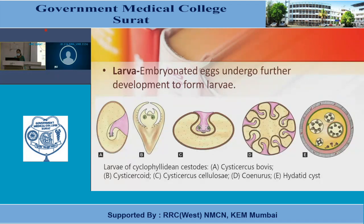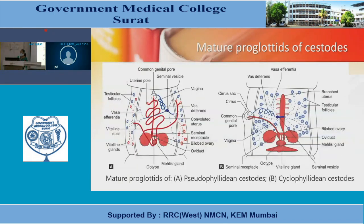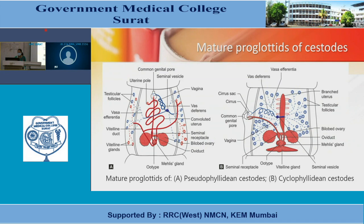Larval forms of Cyclophyllidian cestodes include: cysticercus bovis, cysticercoid, cysticercus cellulosae, coenurus, and hydatid cyst. Mature proglottids: Pseudophyllidian (A) and Cyclophyllidian (B) differ in anatomical features including common genital pores, uterine pores, seminal vesicle, testicular follicles, vagina, vas efferentia, vas deferens, convoluted uterus, vitelline duct, seminal receptacle, bilobed ovary, oviduct, and branched uterus in the Cyclophyllidian form.